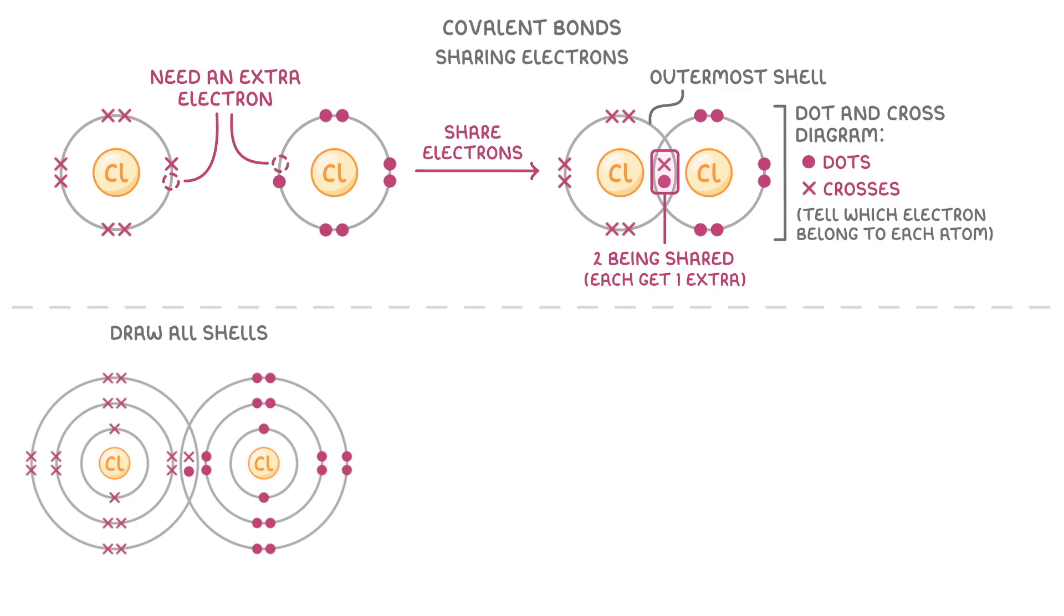An easier way to draw covalent molecules though is with a displayed formula where we just write the chemical symbols of the atoms and use lines to join the atoms that are covalently bonded together. The great thing about these is that it's easy to draw big molecules that would take too long or be too complicated to draw as dot and cross diagrams.